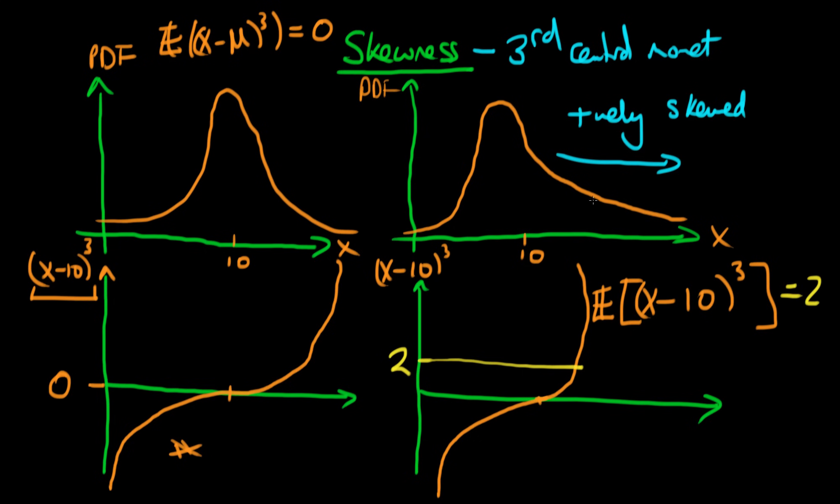That makes sense, and it's another reason we call a positively skewed variable 'positive'—because the skewness is positive for these types of variables.